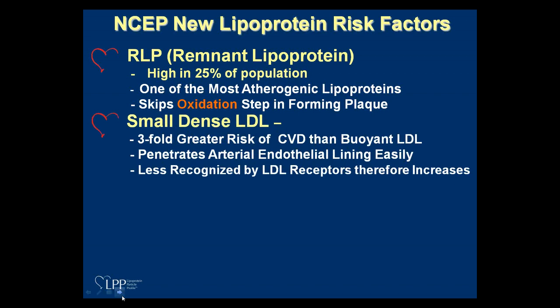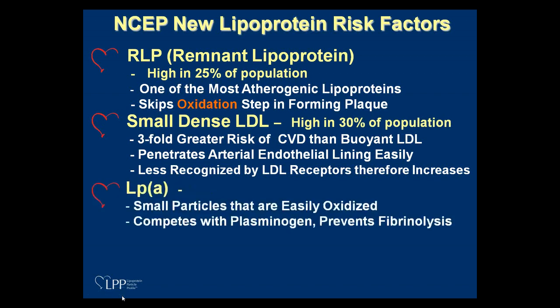The next of the four new risk factors is small-dense LDL. It's atherogenic because it can penetrate the endothelial lining of your artery more rapidly than larger particles. It's easily oxidized, and it's less recognized by LDL receptors than larger LDL particles, so they stay in circulation longer. About 30% of the population has high small-dense LDL.